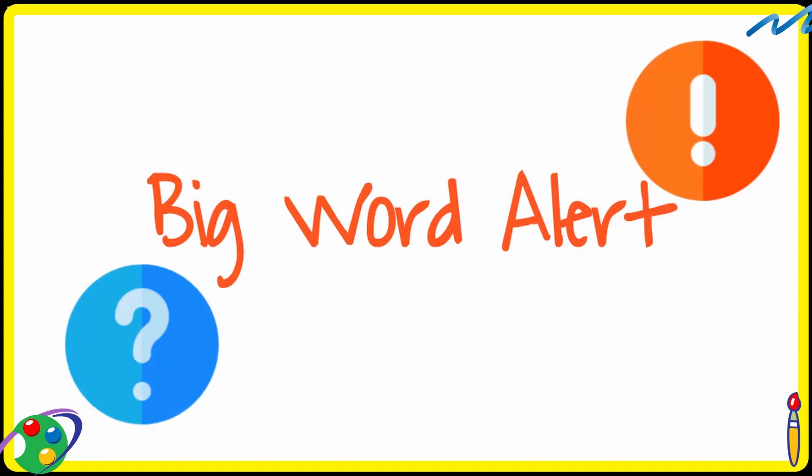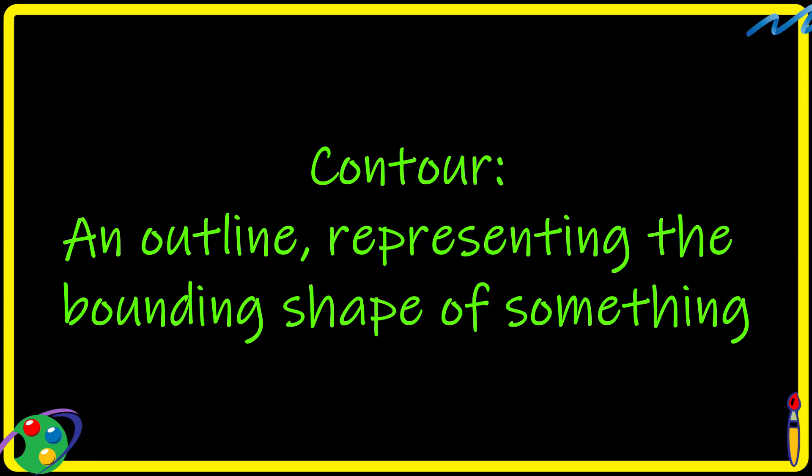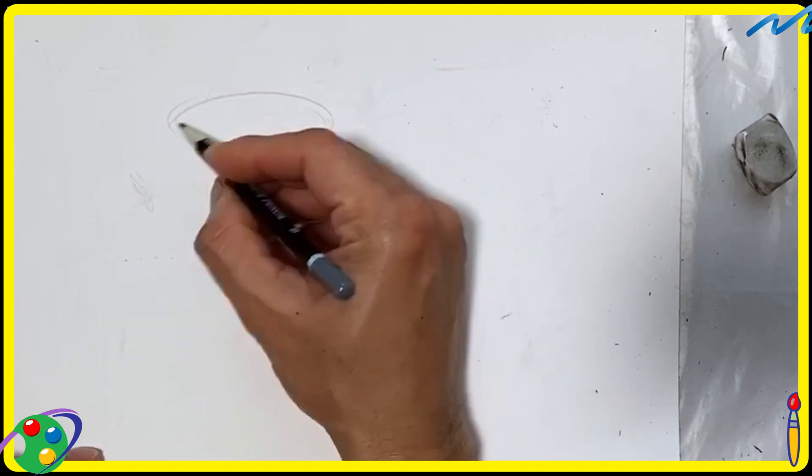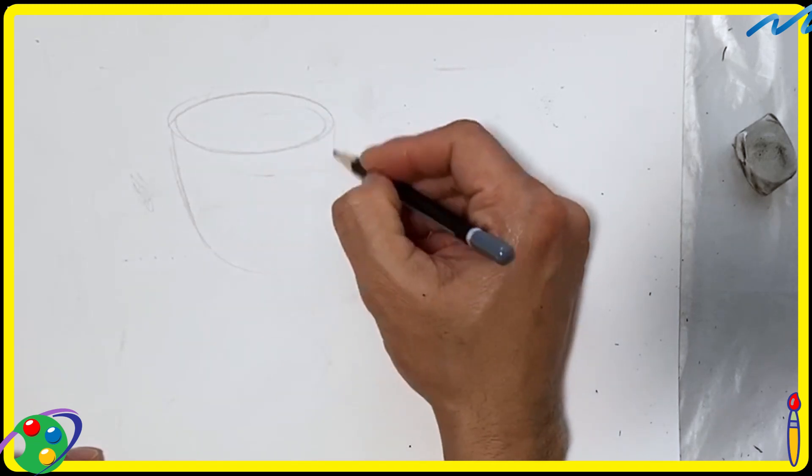Hmm. Another big word. A contour. So what is a contour? A contour is nothing but an outline of something, representing the bounding shape of that object. And here is an example. Here we are creating a contour of a teacup.